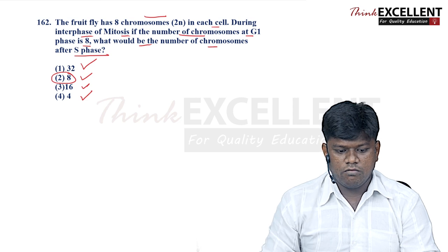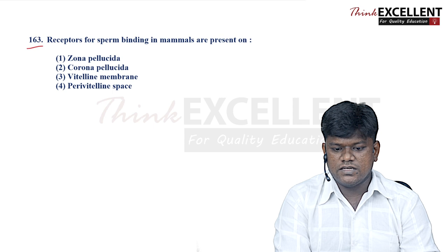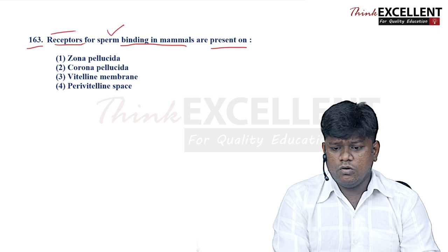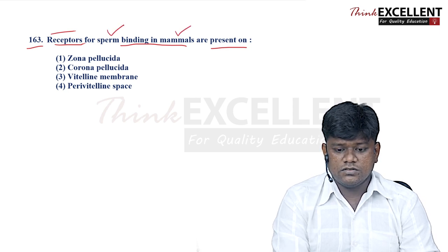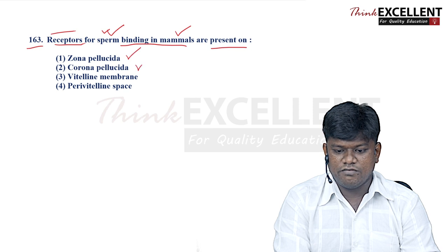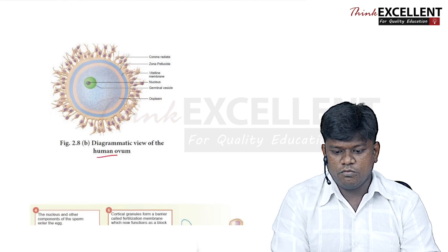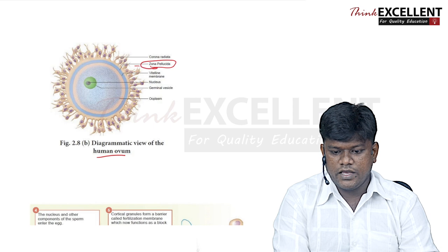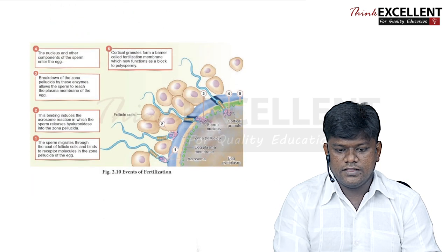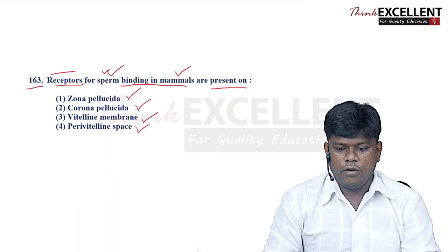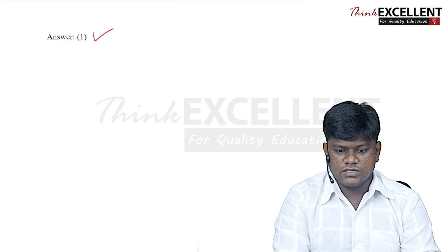Question 163: receptors for sperm binding in mammals are present on — options include zona pellucida, corona radiata, vitelline membrane, and perivitelline space. The zone of pellucida is shown in diagrams from the state board syllabus where sperms make contact. So option 1 — zona pellucida — is the right answer.